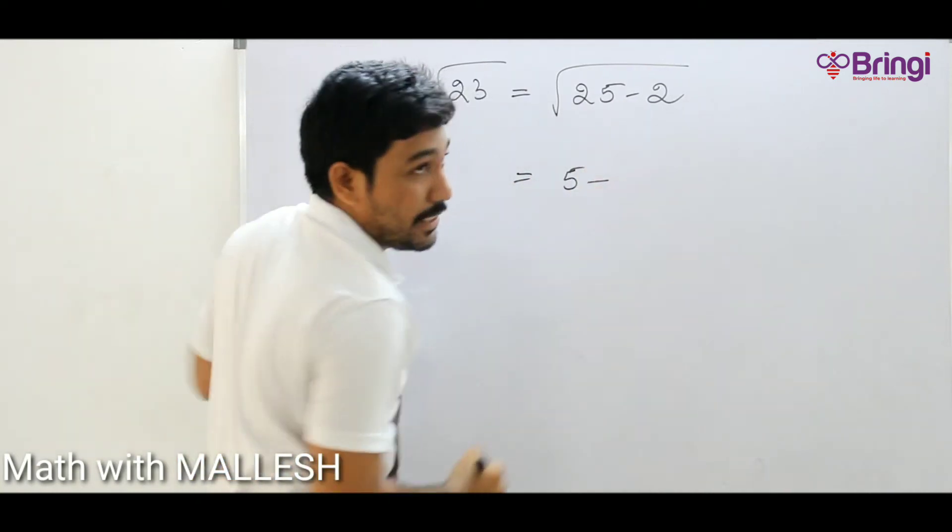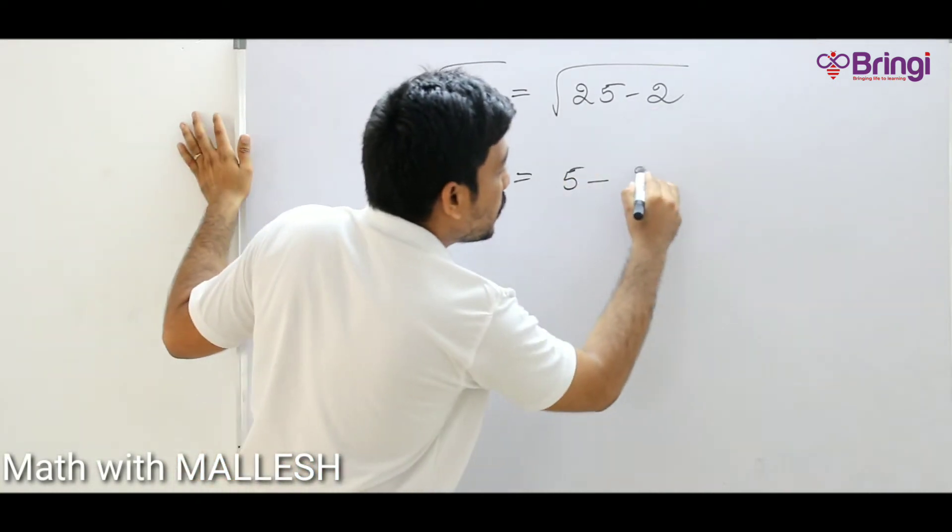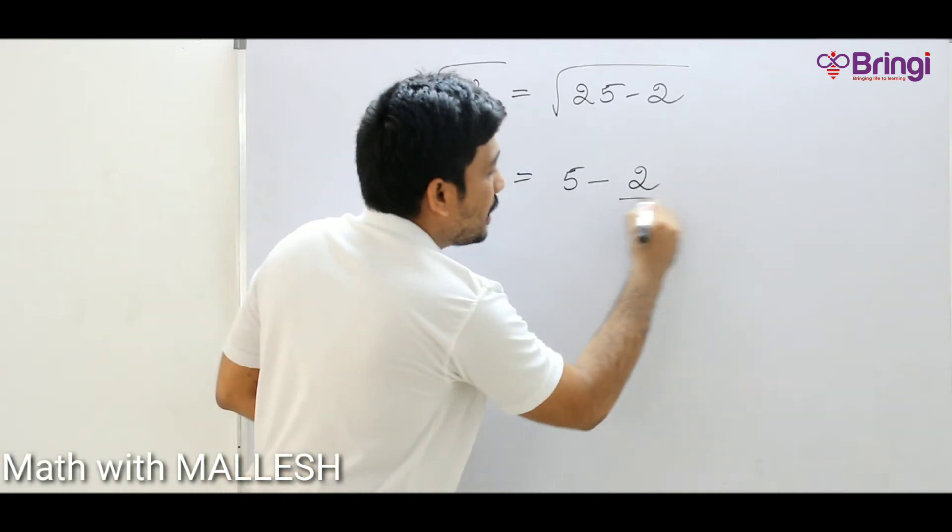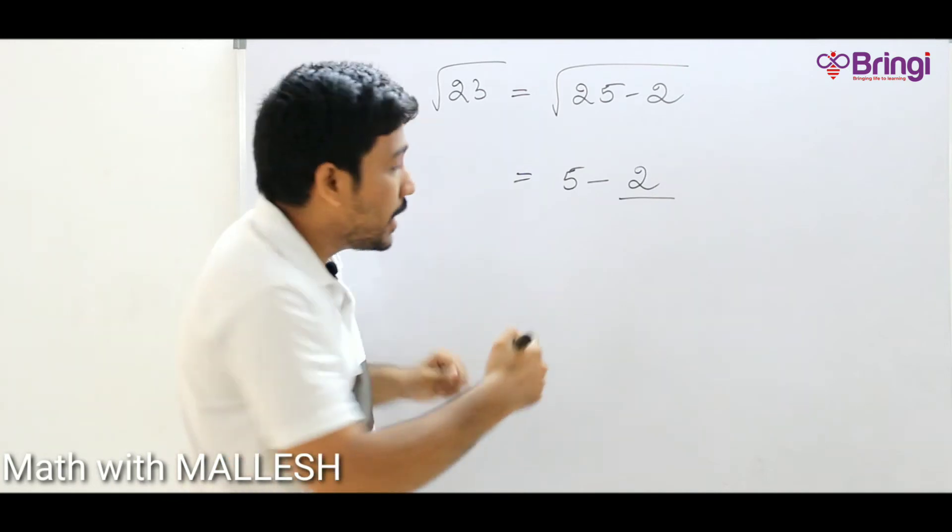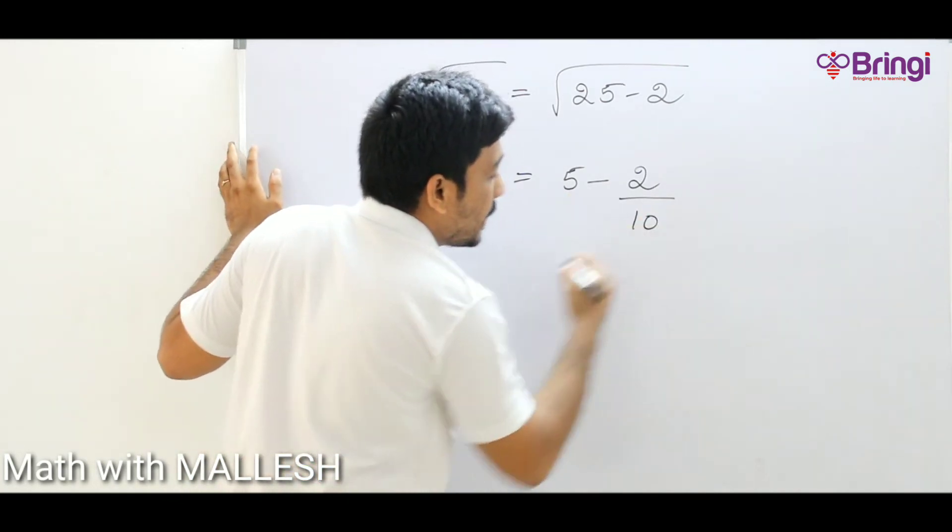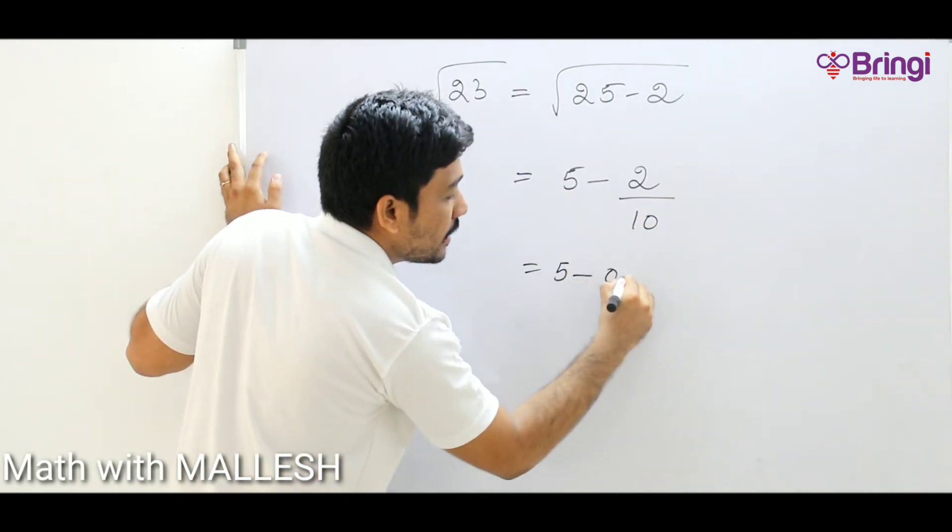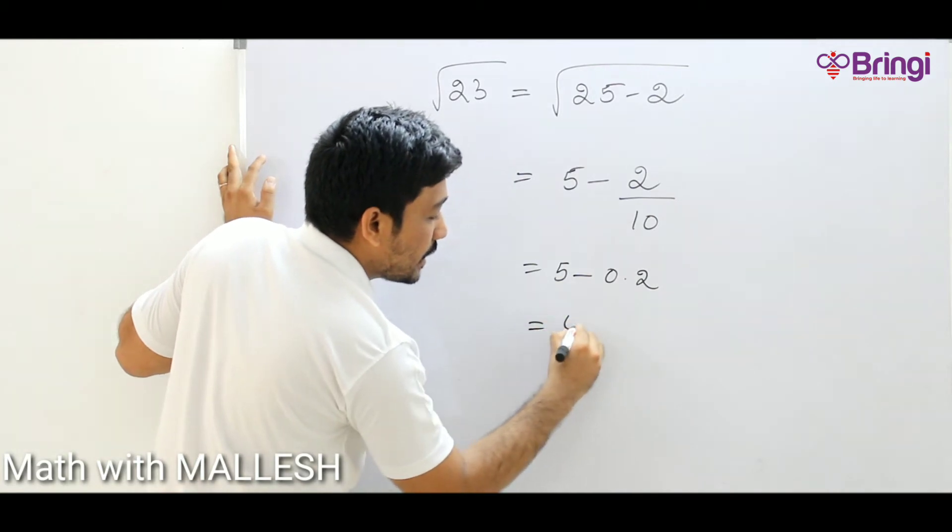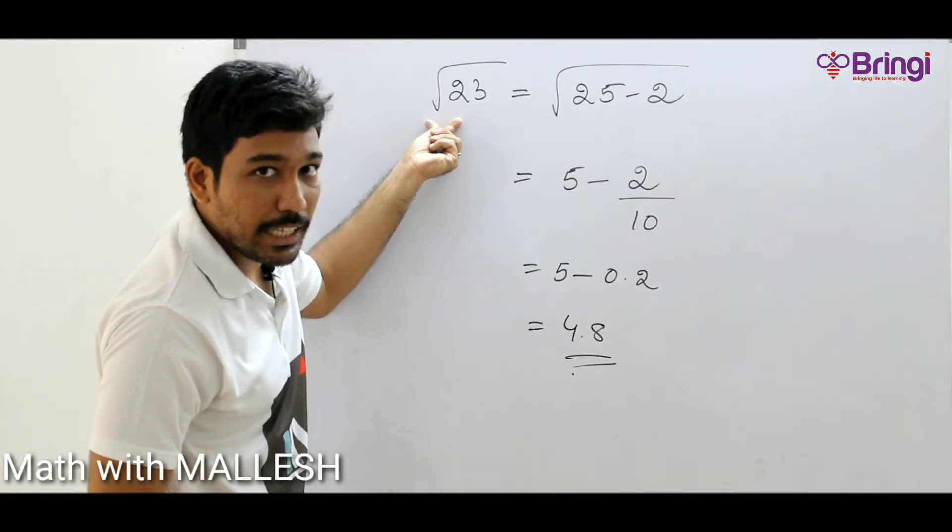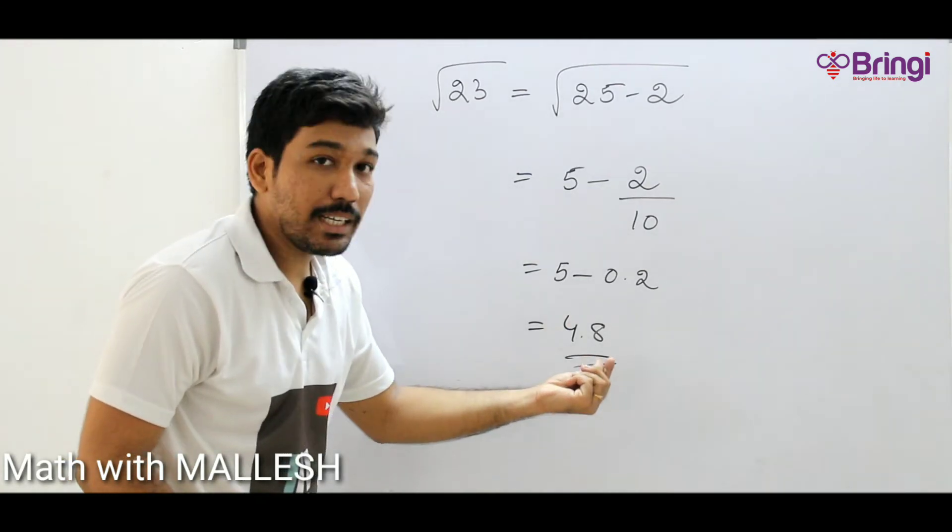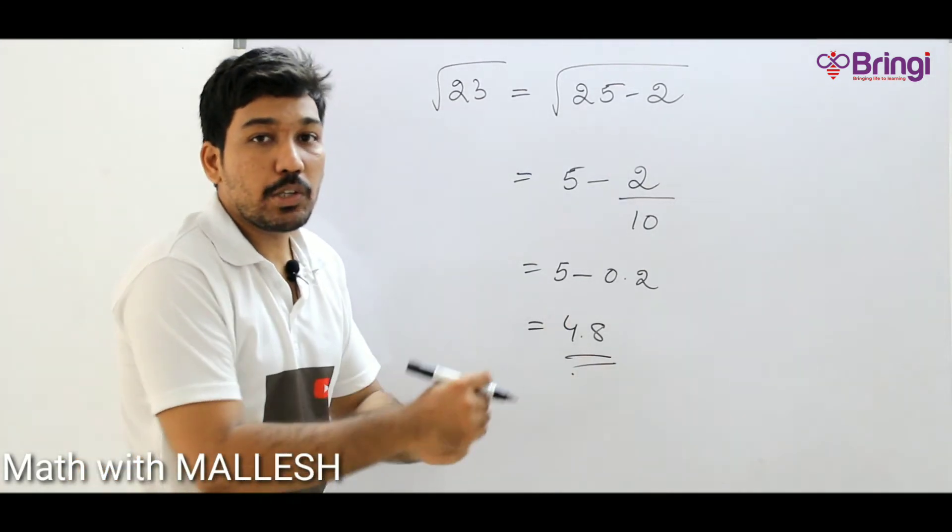Now what is the remainder? 2. Take 2 as it is divided by, take 5 and double it. If you double it you will get 10. So 5 minus 0.2, this is nothing but 4.8. Open calculator, type root 23, and you will get approximately 4.8.